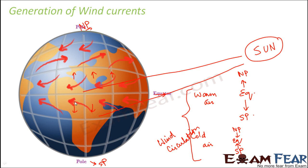That is because the earth is not static. The earth is constantly rotating about its axis and also moving around the sun. As it moves around the sun, different parts receive different amounts of sunlight. By the property of its rotation on its own axis, the direction gets influenced, and therefore it is not exactly north-south but slightly in between. This is how wind currents get generated.